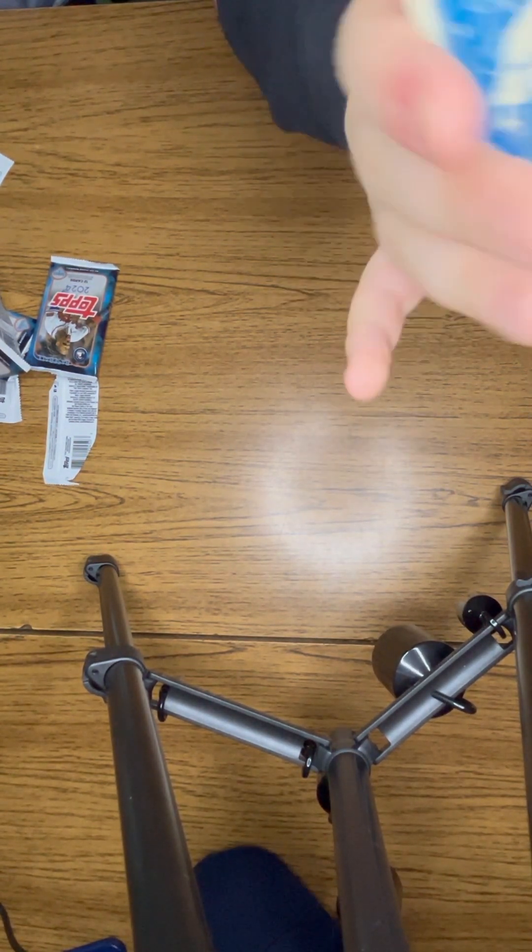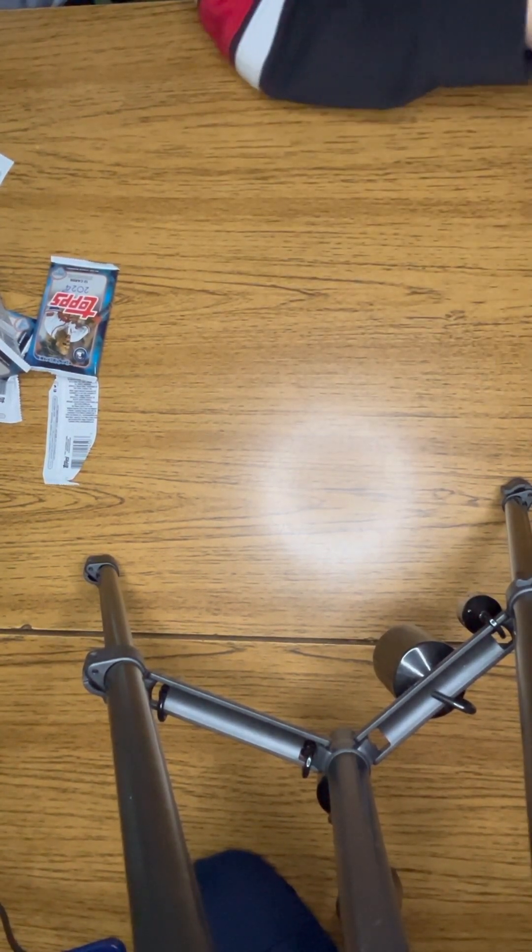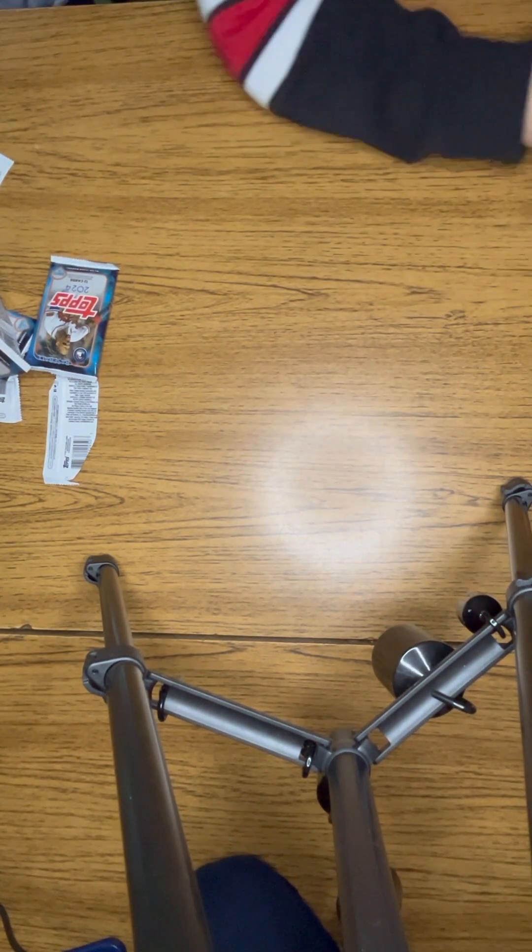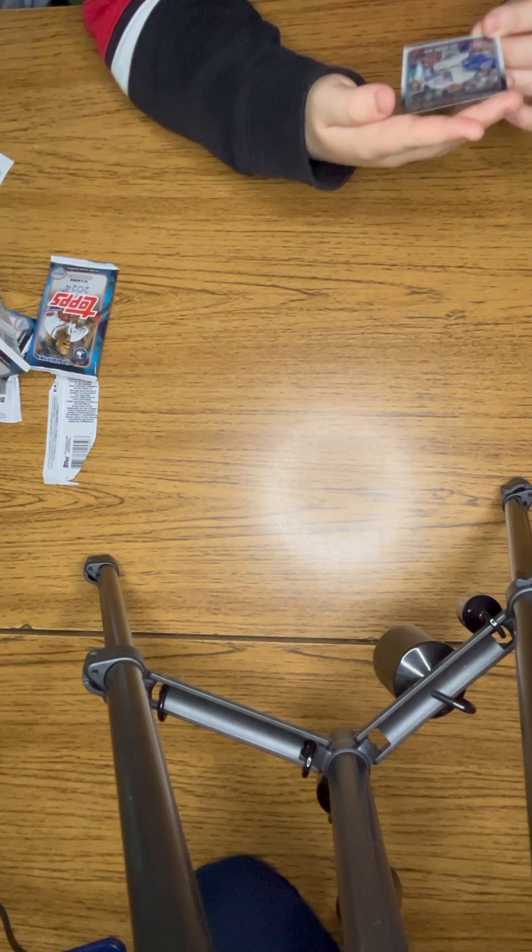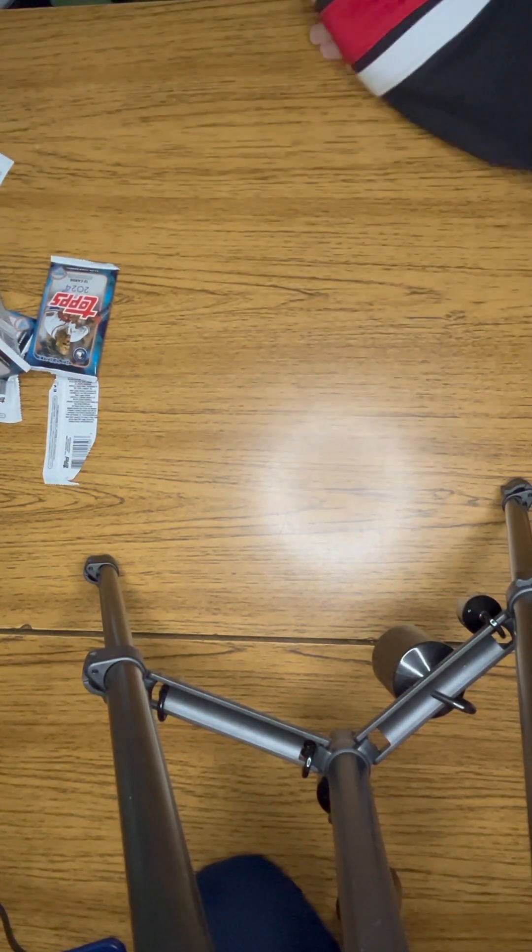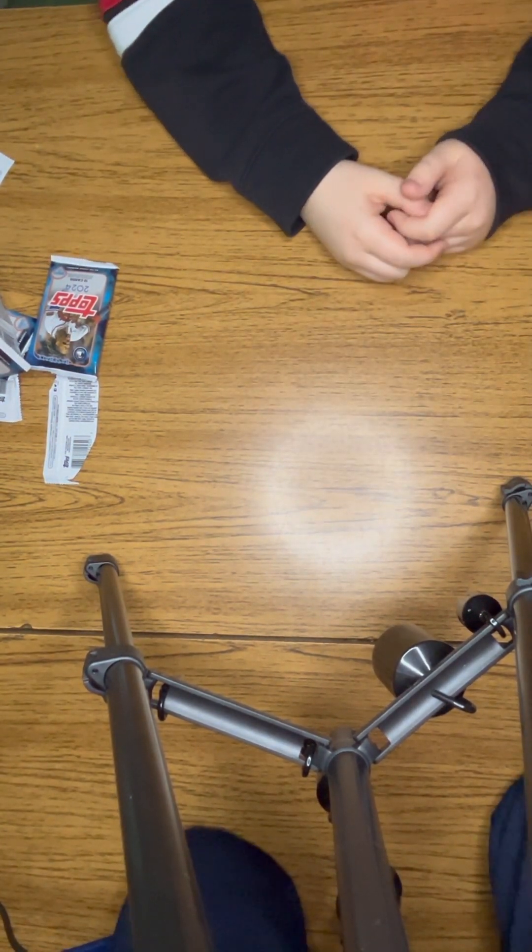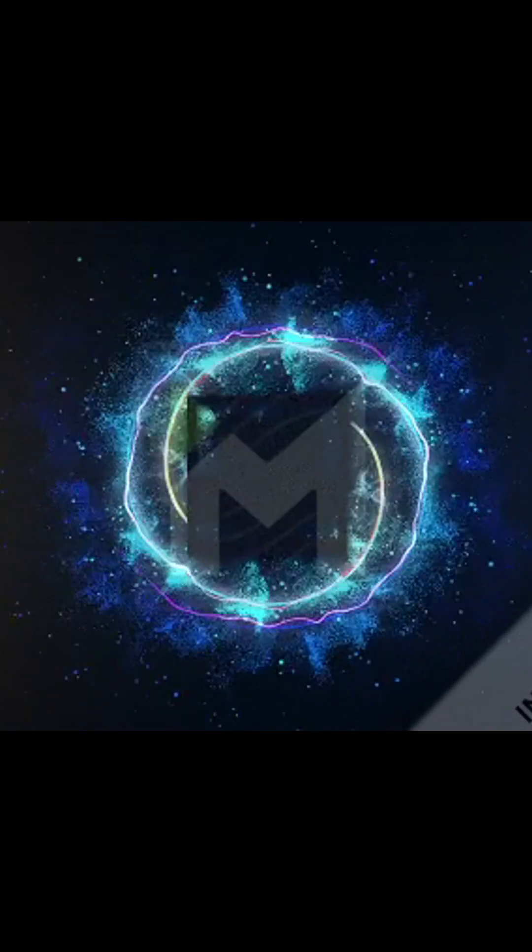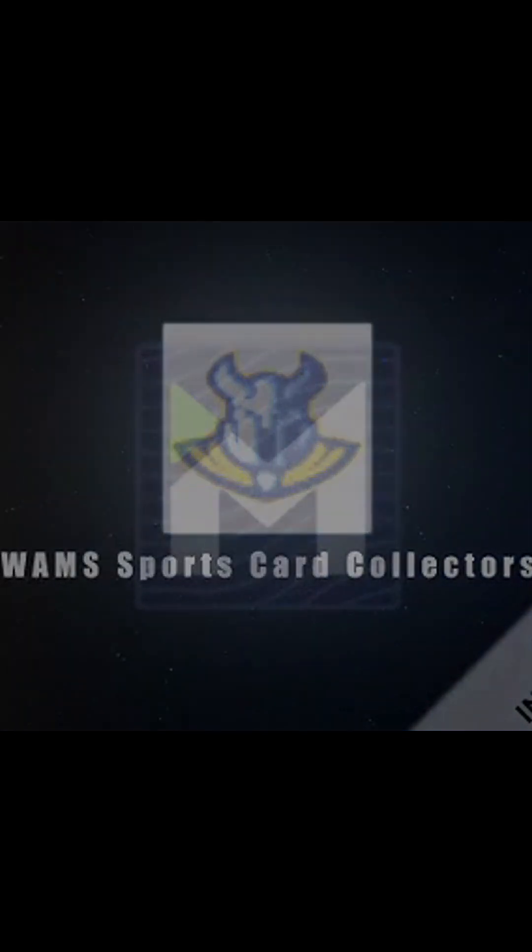Blueprint, an Adley Rutschman rookie Star of the MLB, and then to end it off we have an Edouard Julien. Thank you so much for watching. Don't forget to leave a like and subscribe.